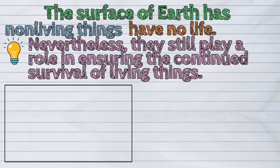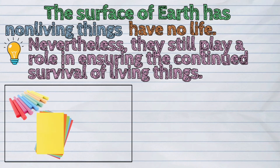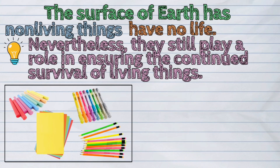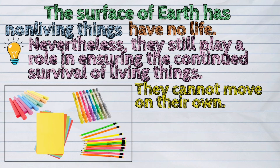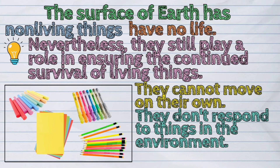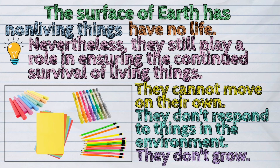Things you can find in the classroom, such as chalk, paper, pens, and pencils, are other examples of non-living things. They cannot move on their own. Non-living things do not respond to things in the environment. They do not grow.